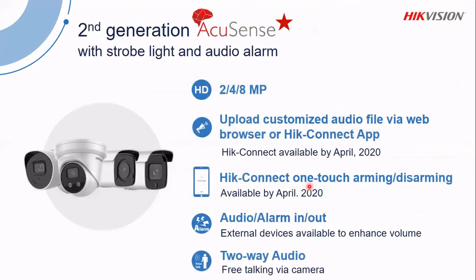In the second generation AccuSense camera, you have an option with strobe light and audible alarm, which is a great deterrent — or could also be used for advertising purposes, which I'll show shortly. Quick recap: 2, 4, and 8 megapixels in the second generation AccuSense. The audio file for the audible alarm is customizable — you can record your own little message in there.